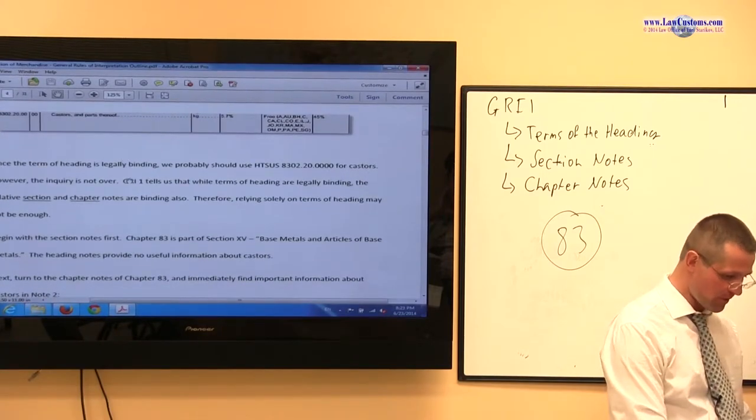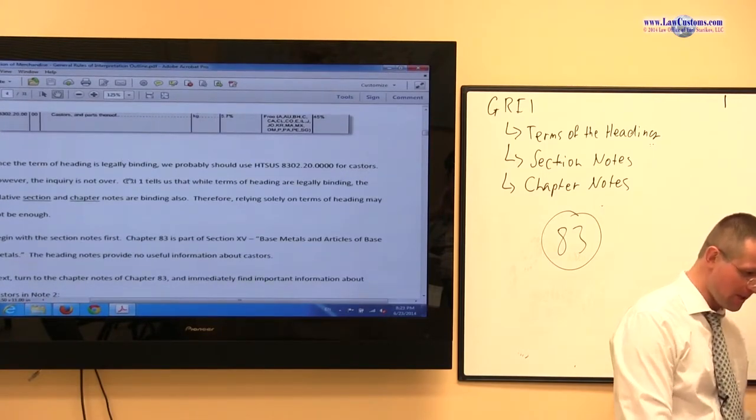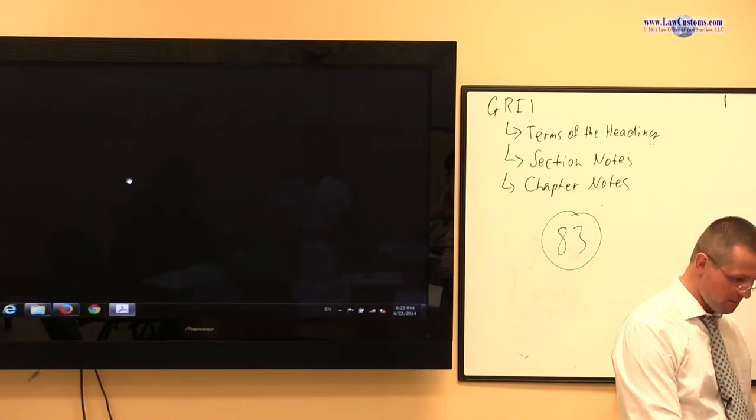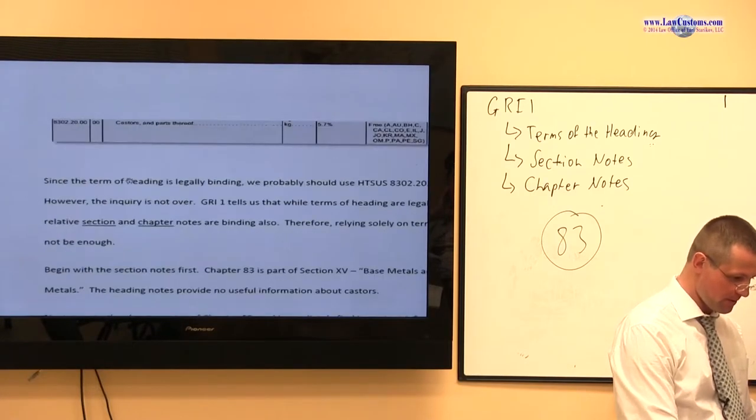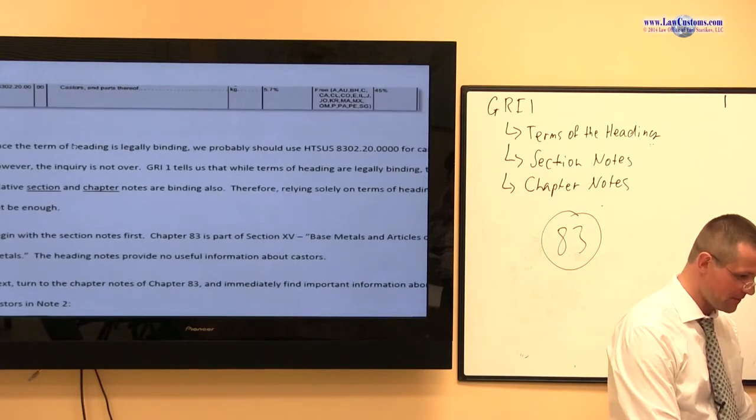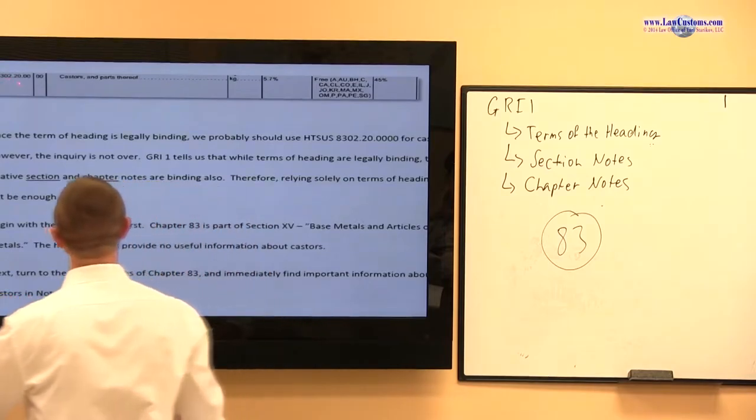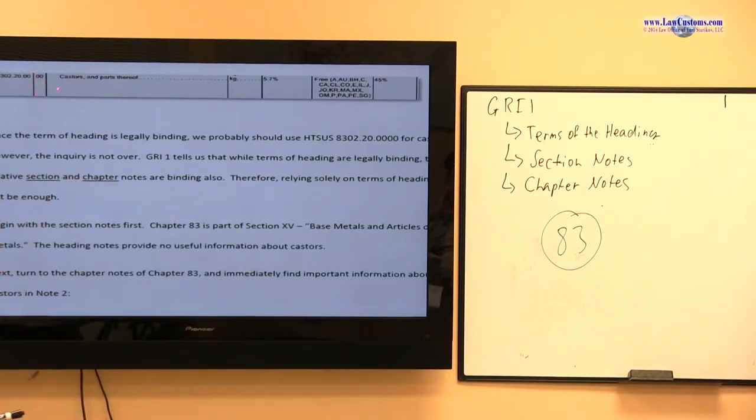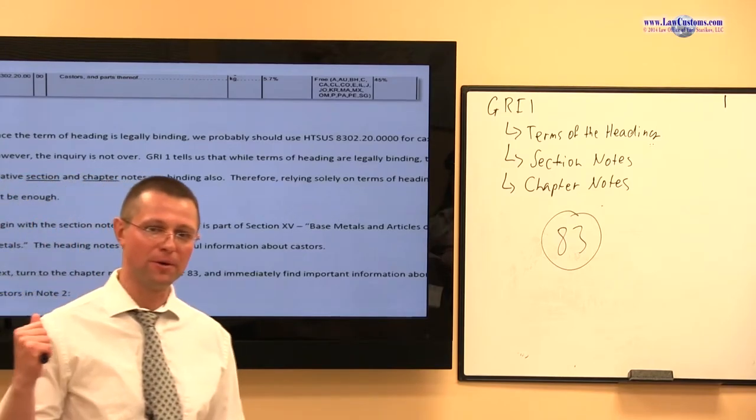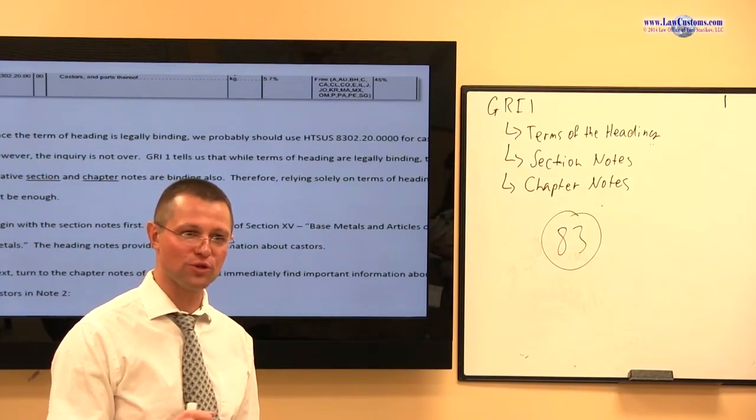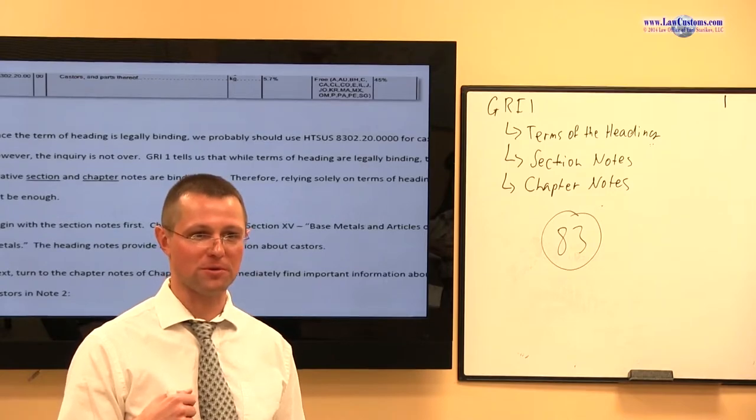And then you look further at the HTS-US, and as you look further, you'll see casters are specifically provided for in this HTS-US heading. 8302.20.0000. Casters. Parts. 3.5% duty. So, I guess you're ready to score. Boom, boom, boom. Take the choice, move on with the question. Right?